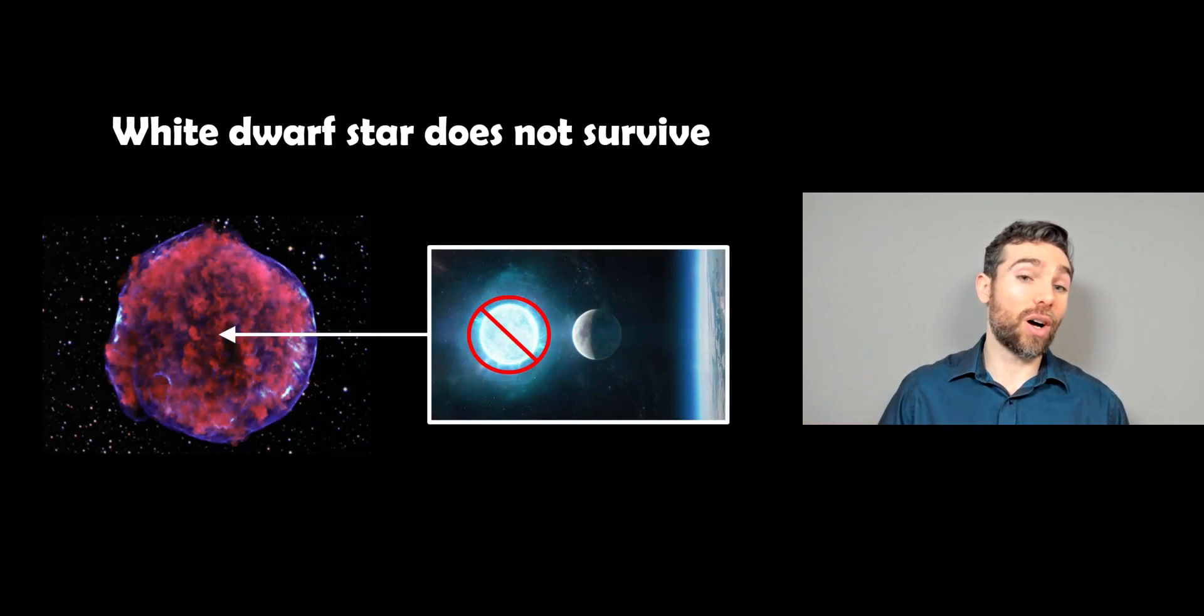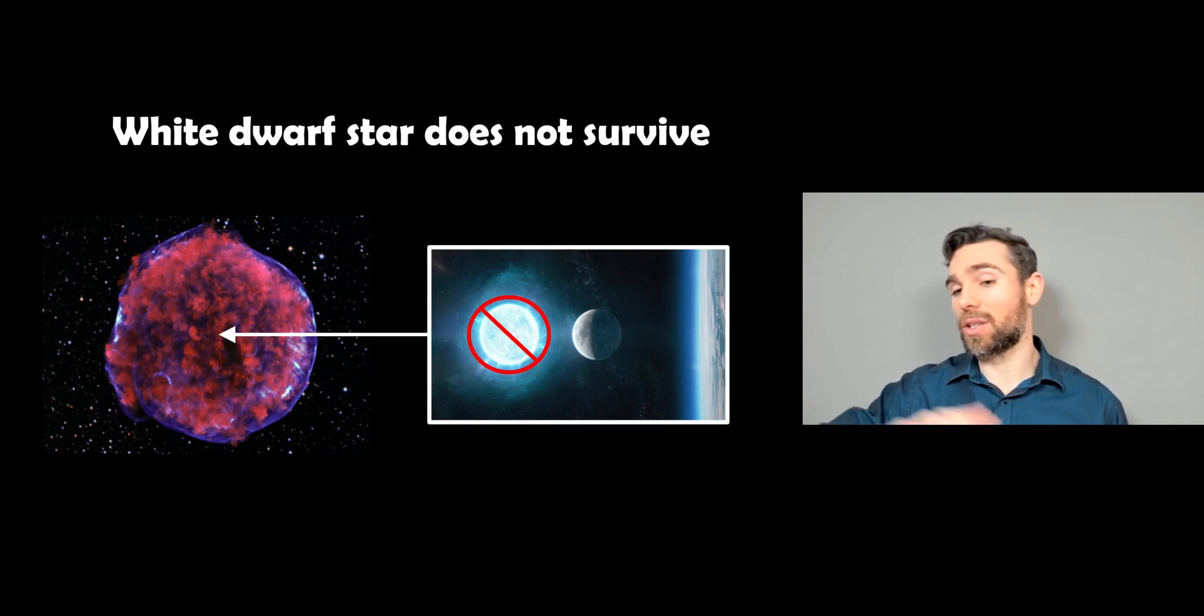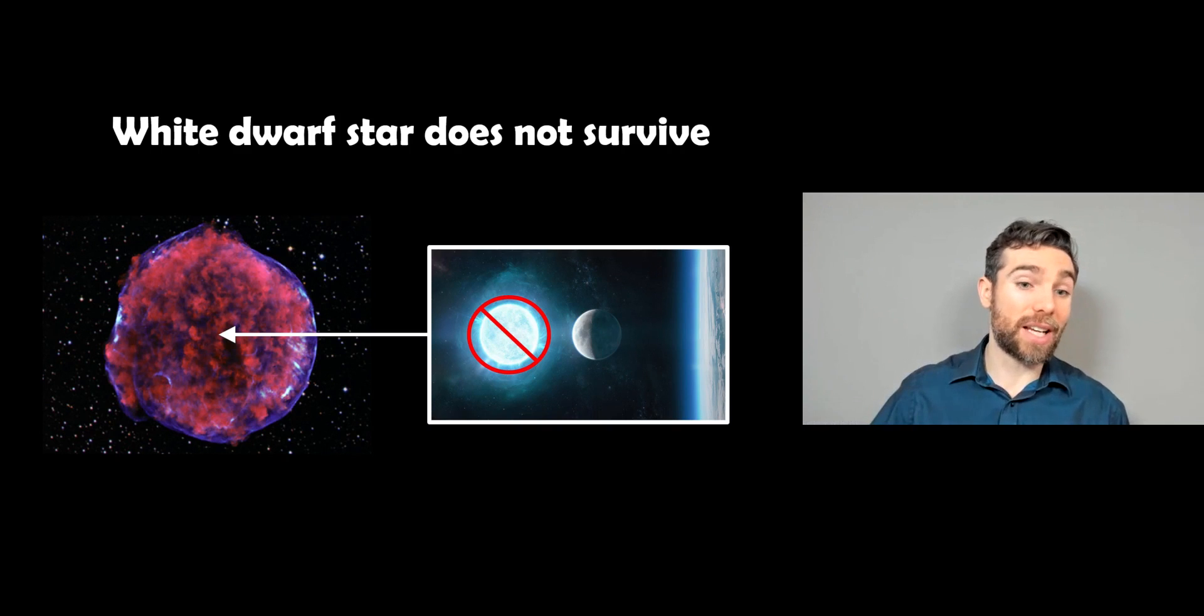So when a type 1a supernova occurs, the white dwarf star generally doesn't survive because the entire star basically explodes. The companion star though, the red giant that it was orbiting and pulling the material off, generally does survive.